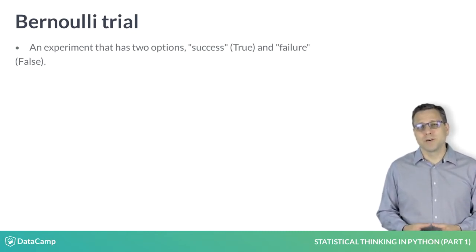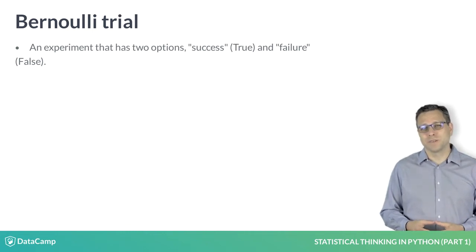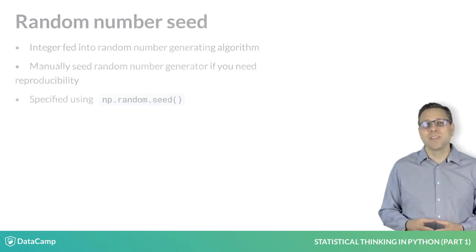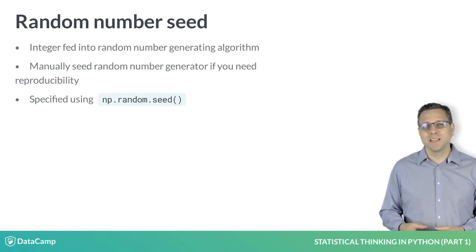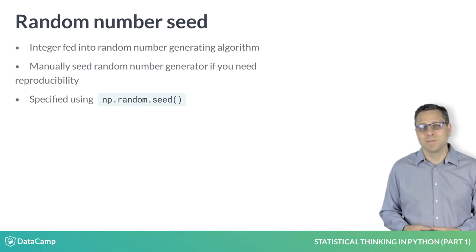The pseudorandom number generator works by starting with an integer called a seed, and then generates random numbers in succession. The same seed gives the same sequence of random numbers, hence the name pseudorandom number generation. So if you want to have reproducible code, it is a good idea to seed the random number generator using the np.random.seed function.